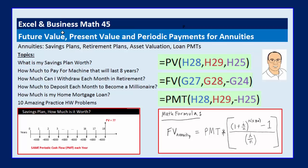Welcome to Excel and Business Math video number 45. In this video, we're going to see how to calculate the future value, the present value, and something new — the PMT, or the periodic payment for annuities.